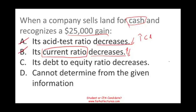Now at 50-50, the choices are C — the debt-to-equity ratio decreases — or D — it cannot be determined from the given information. I would look into C because we have a gain. Remember, the gain will increase your income, which in turn increases your equity. So there is some logic to the C answer.